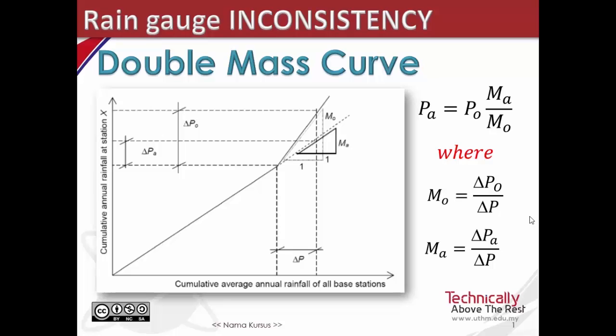A double mass curve is a plot of the accumulation of the observed element over time for one location or test station versus the accumulation of the observed element over time for a reference location or base station. So the mass curve is approximately a straight line if the variations at both test and base stations are quite consistent.